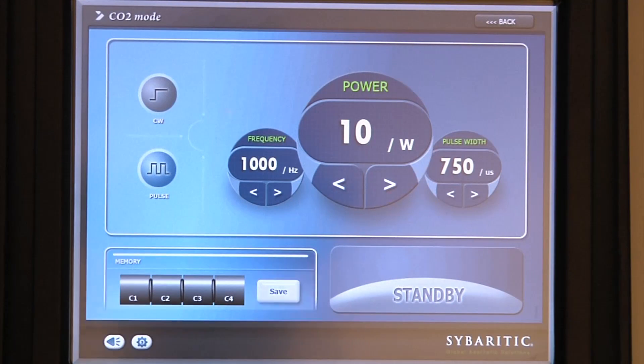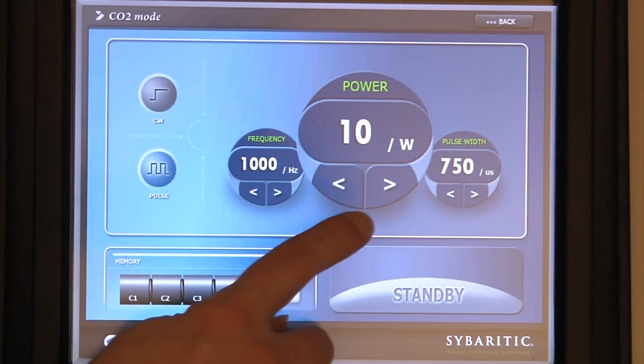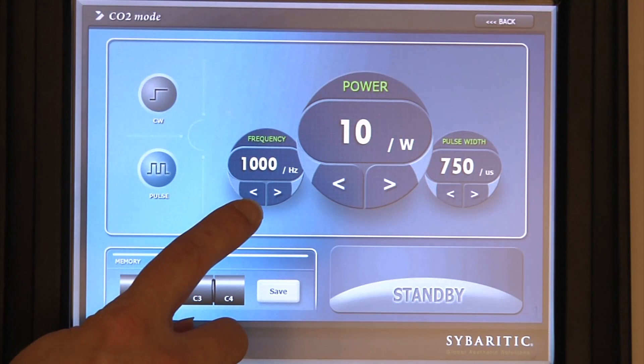In the CO2 mode of operation, we can choose between a continuous wave or pulsed waves. We set the power here with a range up to 40 watts. We can also control the frequency, the rate at which we are delivering pulses.